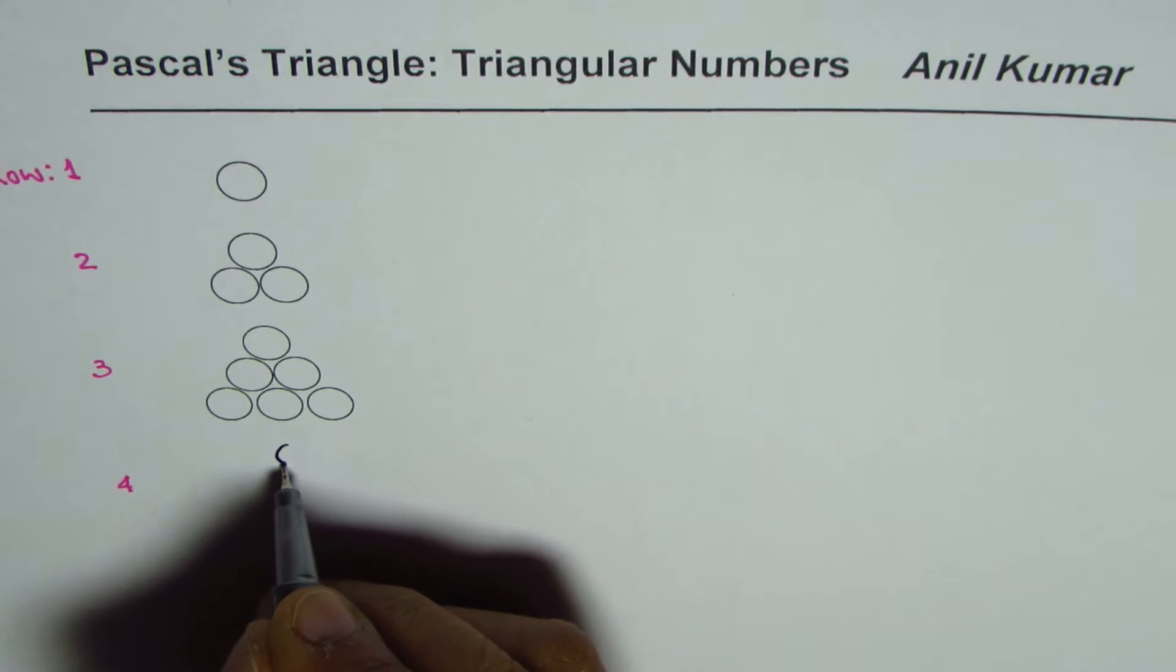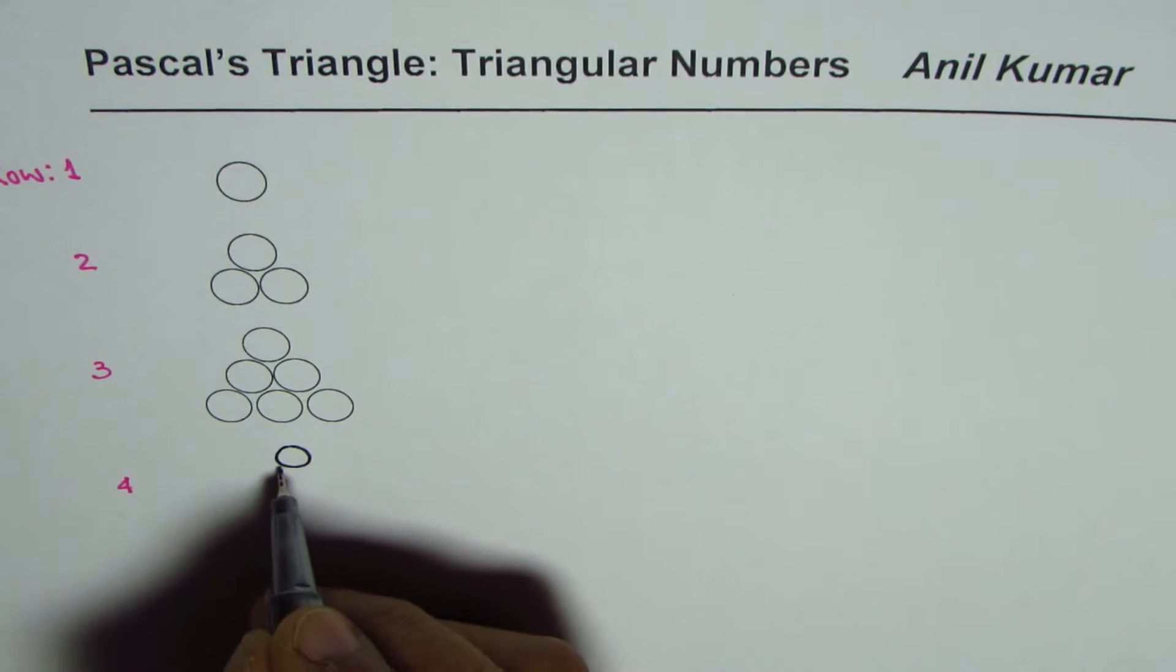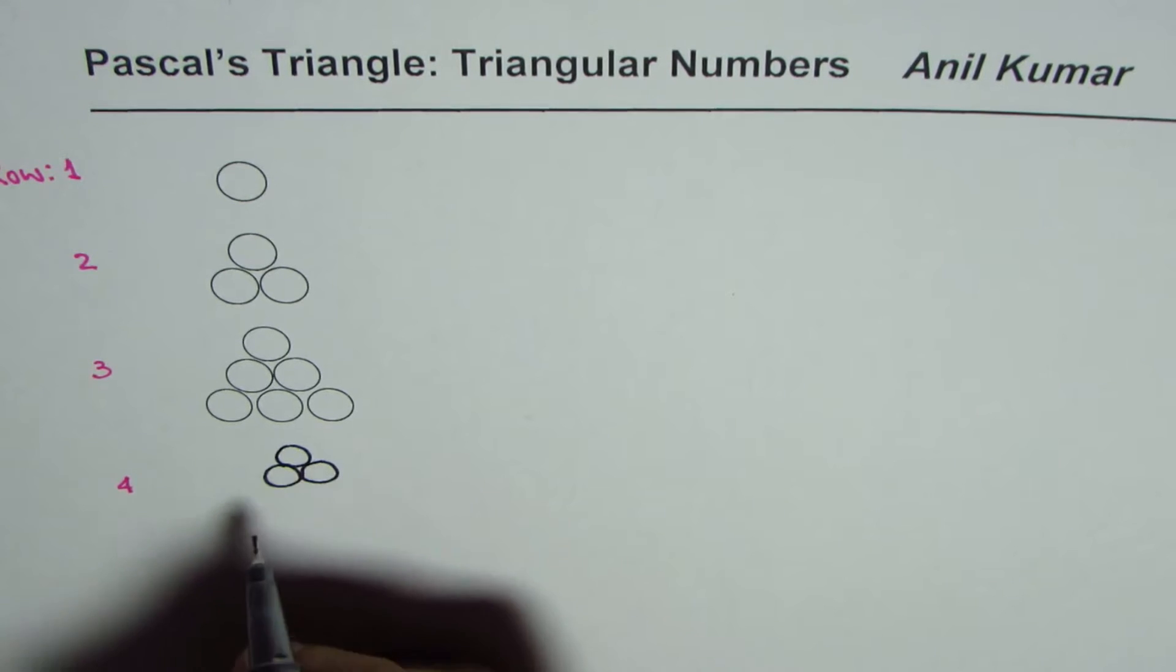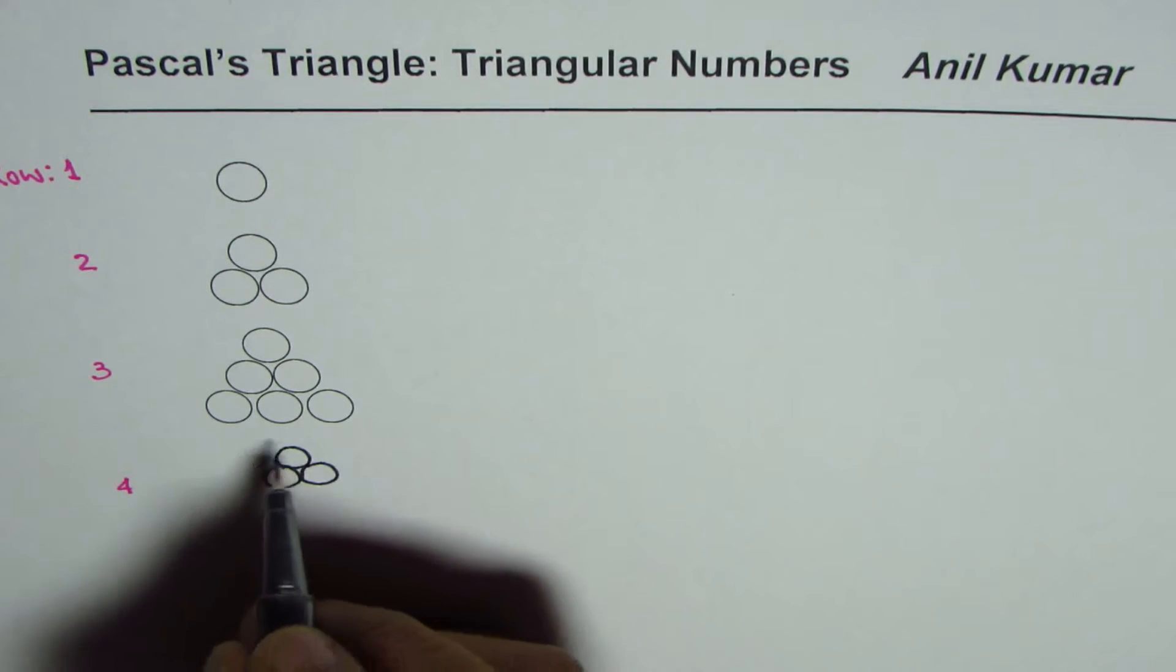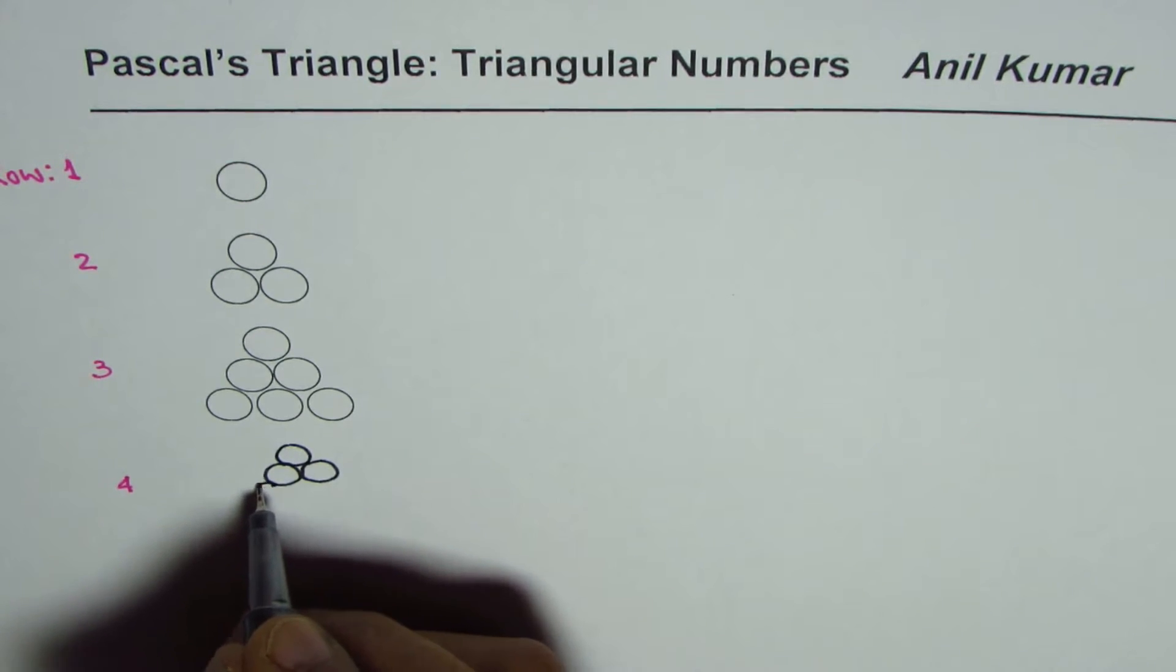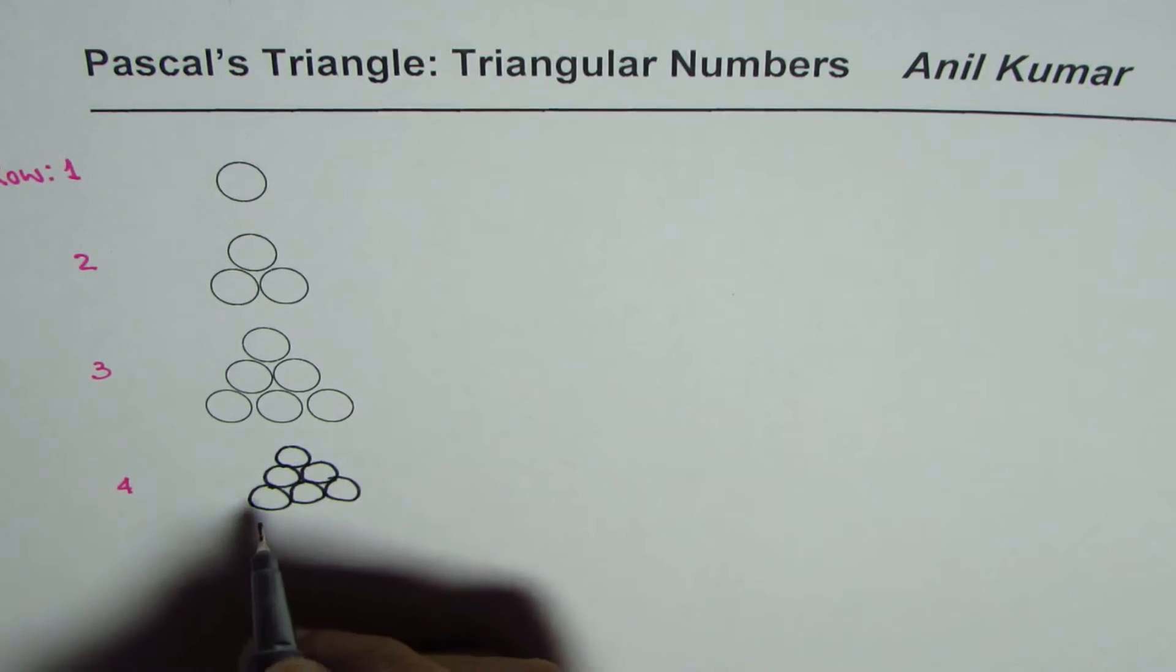So what we have here is the first row has one circle. The next row has two circles. So we have two circles and the third row will have three circles. Let me draw three circles here. One, two and three. And then the fourth row will have four circles.